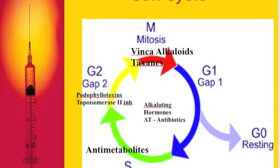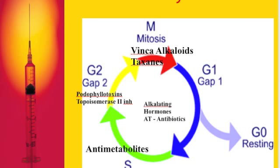Looking at the diagram, the circle shows the phases of the cell cycle: mitosis, GAP1, synthesis, GAP2, and G0 (resting). Going around the circle represents cell cycle specific drugs. In mitosis, you have the vinca alkaloid and taxane group. In synthesis, you have the anti-metabolites. In GAP2, you have the podophylltoxins. All of these are active during specific cell cycle phases and most effective against rapidly growing cancer cells.